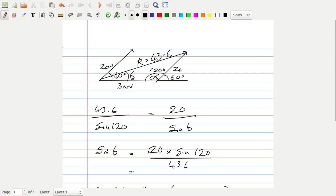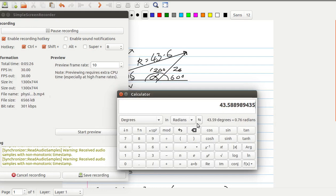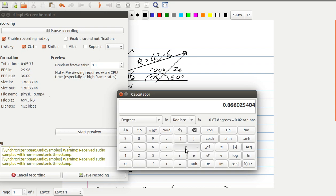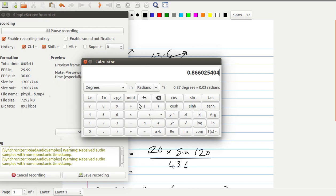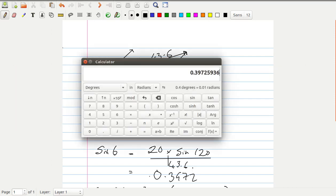Okay, let's just work that out. So we have sine 120 times 20, times 20, 17.32, divide that by 43.6. And that comes to 0.397, and then if we take the arc sine of 0.397.